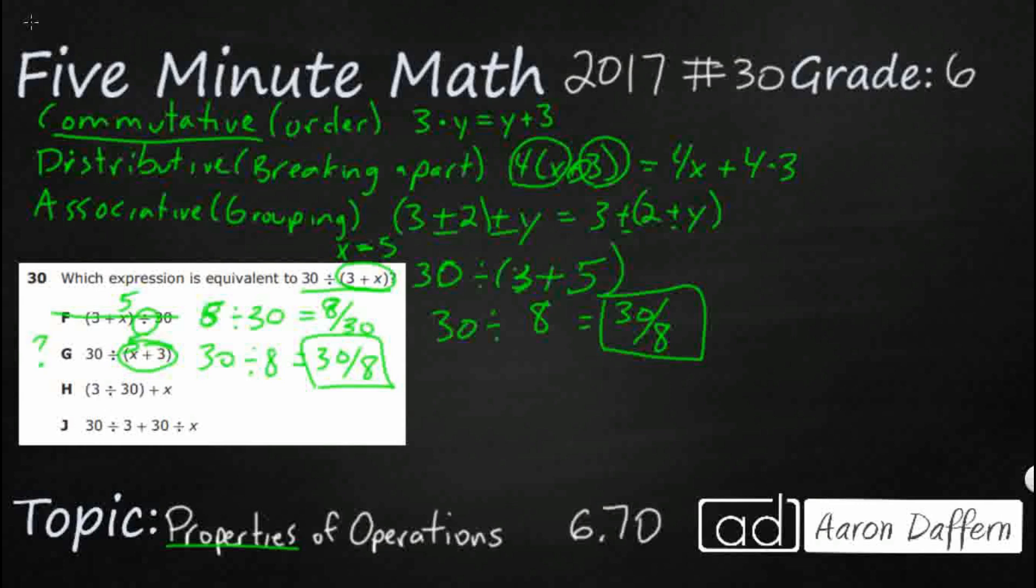Let's double check the rest. So, 3 divided by 30. So, that's 3 thirtieths plus 5. So, that's going to be 5 and 3 thirtieths, which reduces to 5 and 1 tenth. And that is not going to be the same as this 30 over 8.